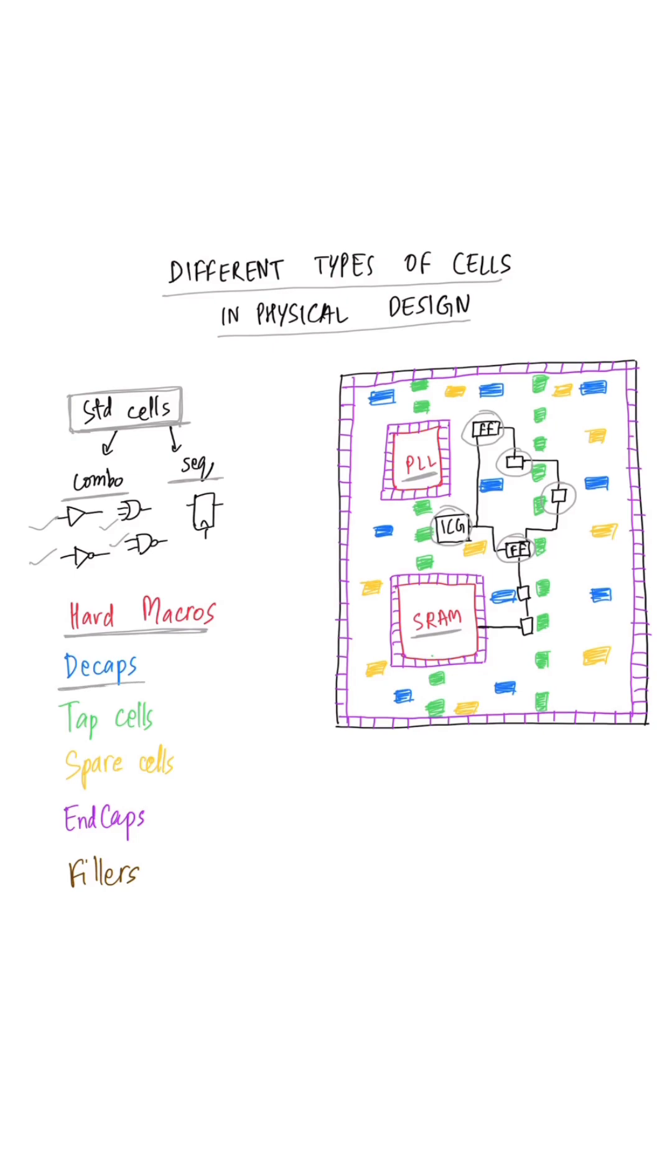The next category is the decap cells. Decap cells are basically capacitors which are sprinkled all throughout the partition. And they help with the dynamic IR drop during high switching activity of the design.